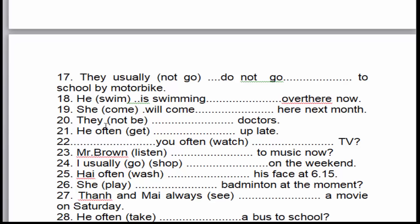Câu số 20: 'They won't become doctors.' Họ không muốn trở thành bác sĩ. 'They' là chủ ngữ số nhiều. Đây là một sự thật, cho nên chúng ta sử dụng thì hiện tại đơn ở thể phủ định. Nhưng vì động từ ở đây là 'be', cho nên chúng ta sẽ sử dụng to be — 'are not'.